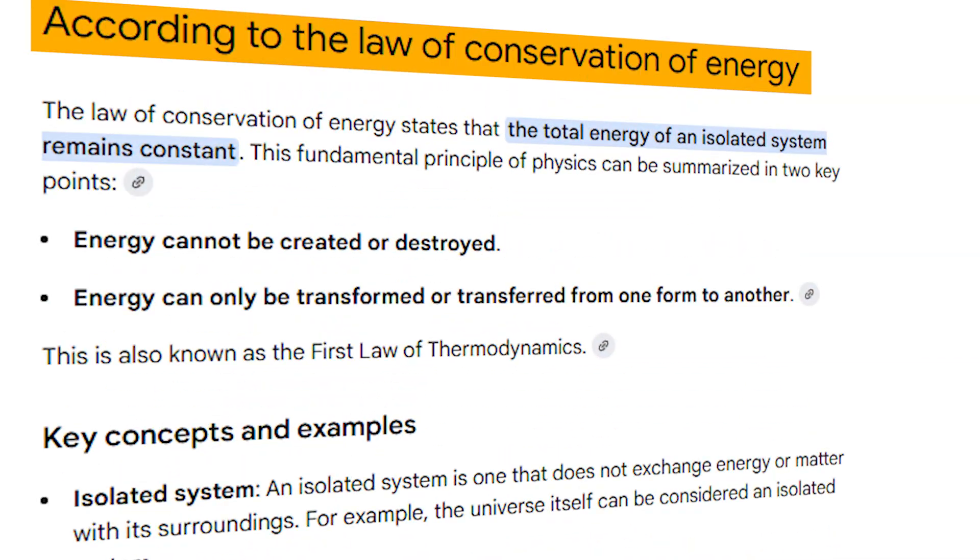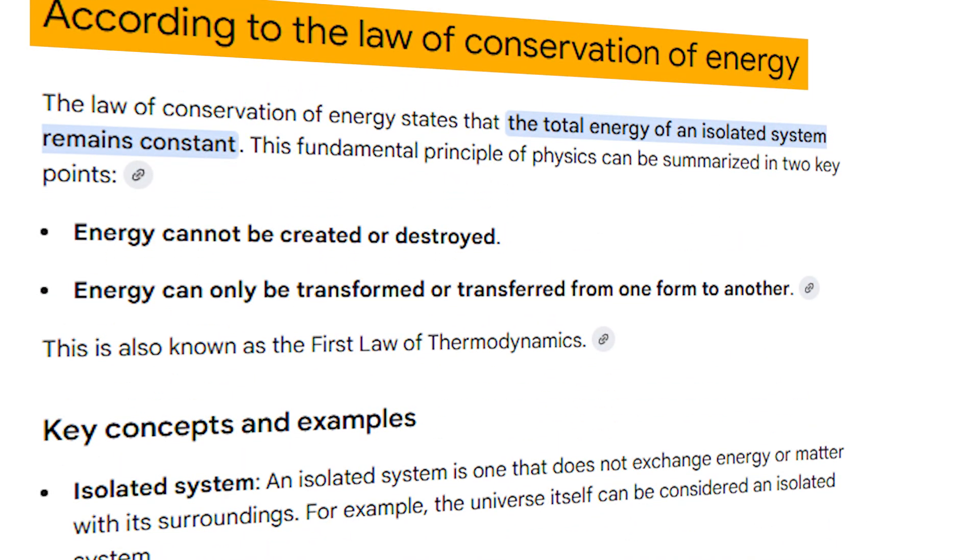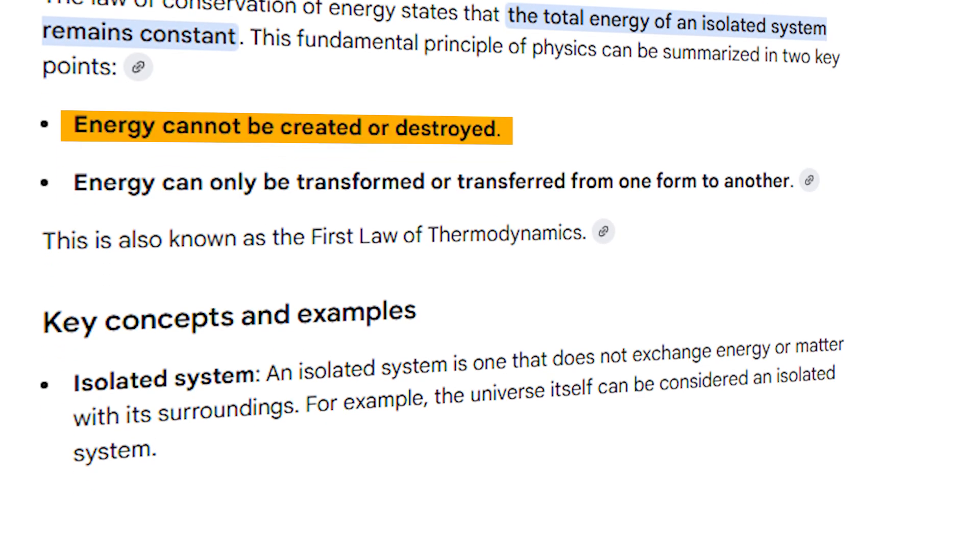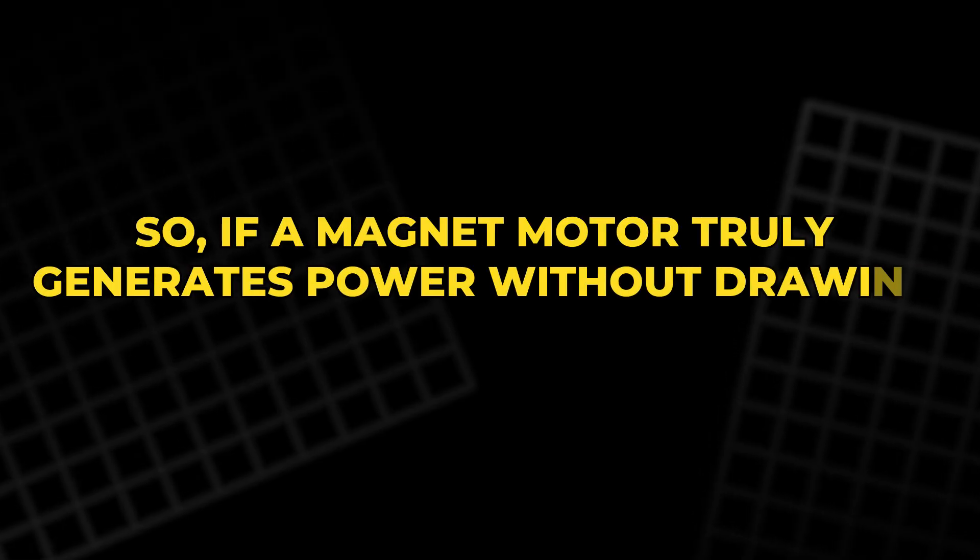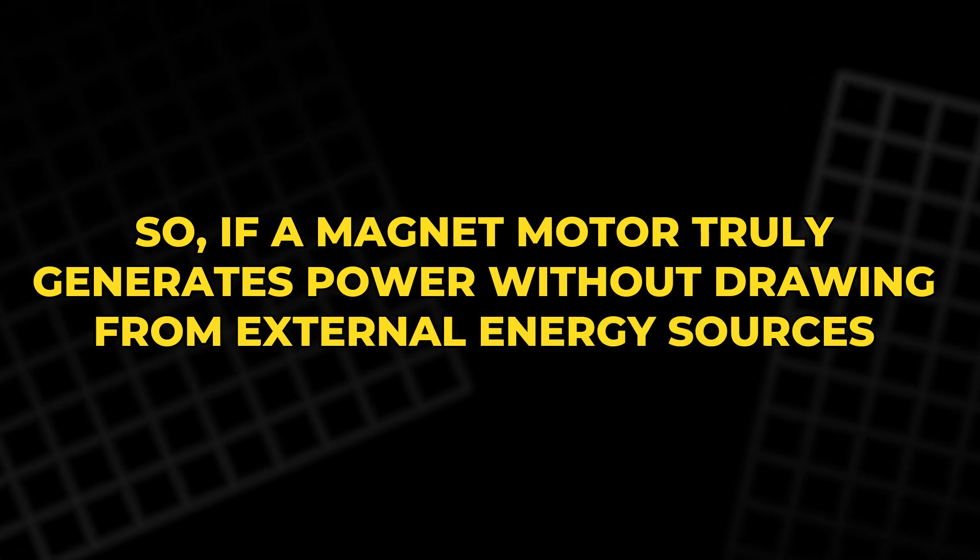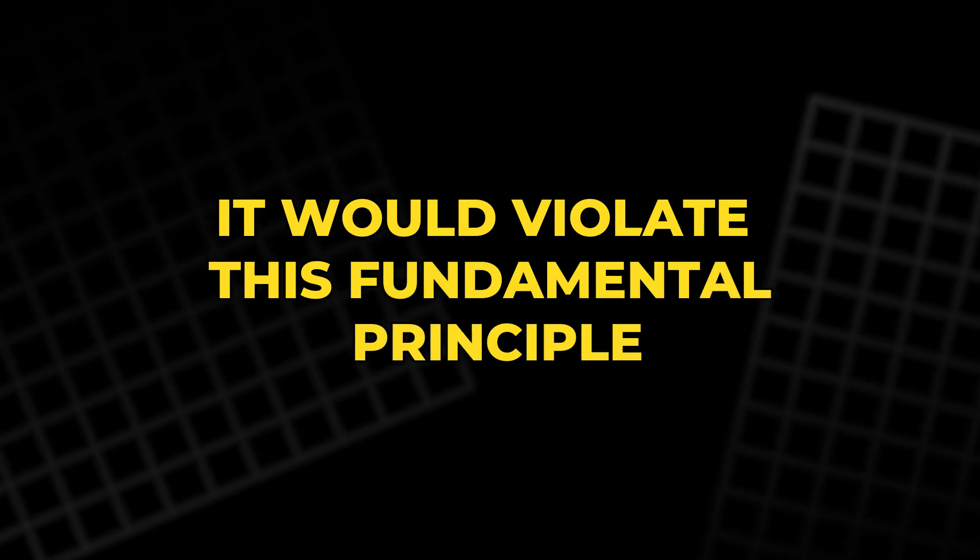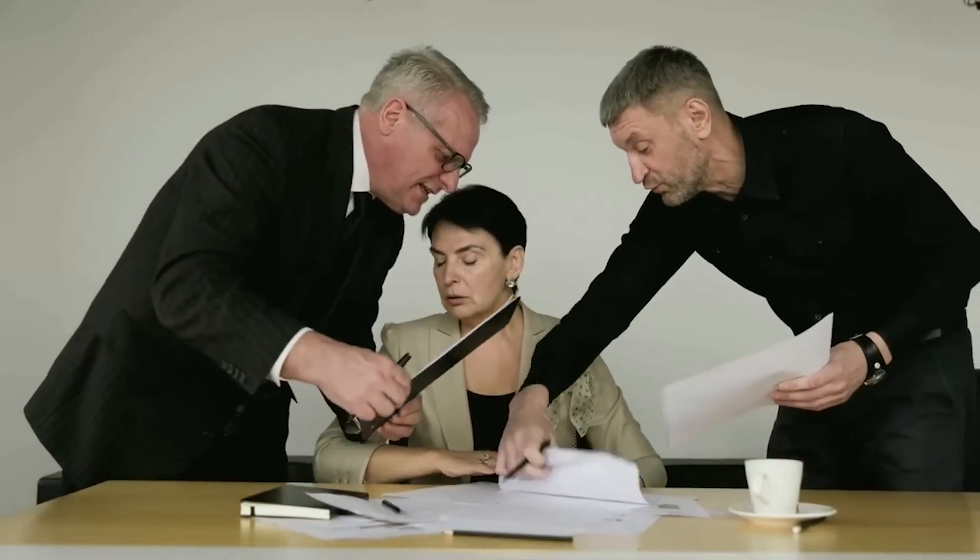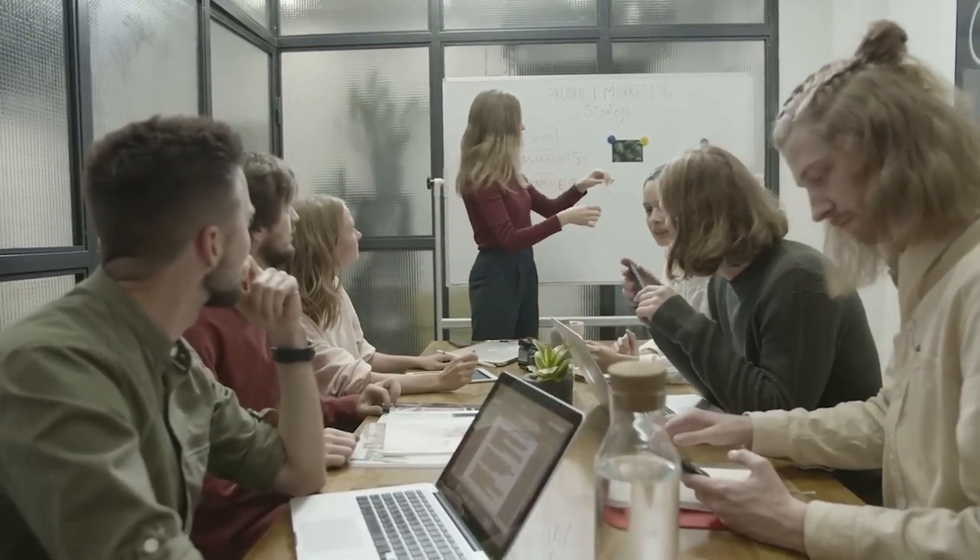According to the law of conservation of energy, energy cannot be created or destroyed, only transformed. So, if a magnet motor truly generates power without drawing from external energy sources, it would violate this fundamental principle. Yet, magnet motor enthusiasts argue that the device isn't violating the laws of physics. Rather, they claim it taps into a mysterious, hidden source of energy in the universe.